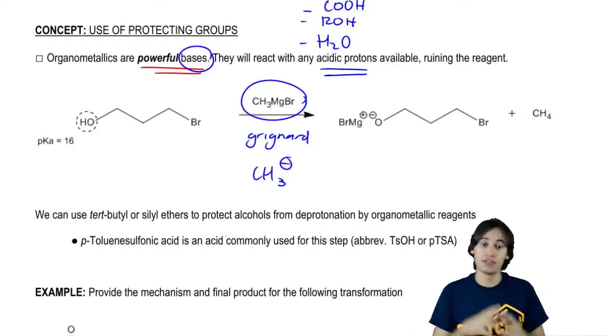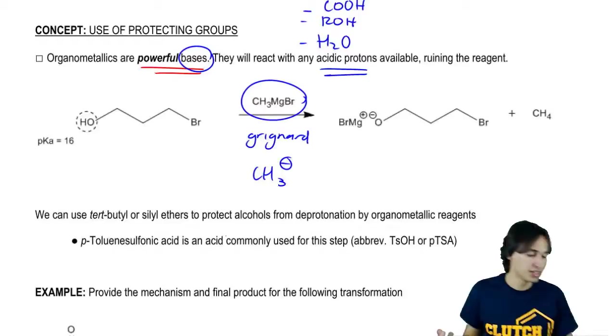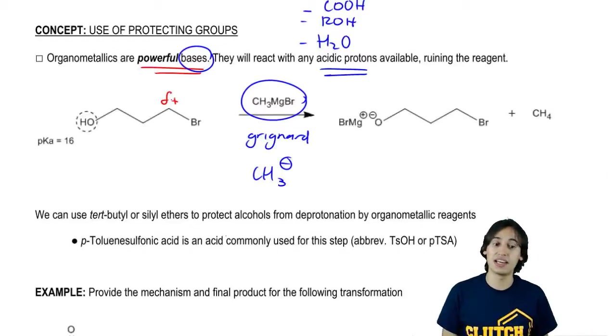Do CH3 negatives or Grignards react with alkyl halides? Absolutely. Remember that the alkyl halide has a partial positive there. So I would expect to get an SN2 reaction on that alkyl halide. But wait, we've got a problem. We also have an alcohol on this molecule.